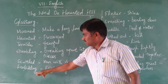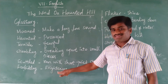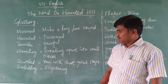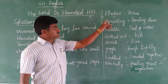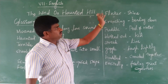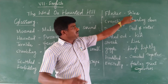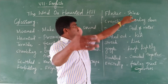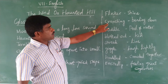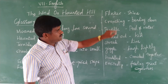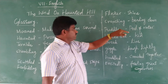The next word is 'Forbiddy,' which means slightly. The next word is 'Flicker,' meaning to move to the side — something going to the side is called a Flicker. The next word is 'Crouching,' which means bending down. That is called Crouching.